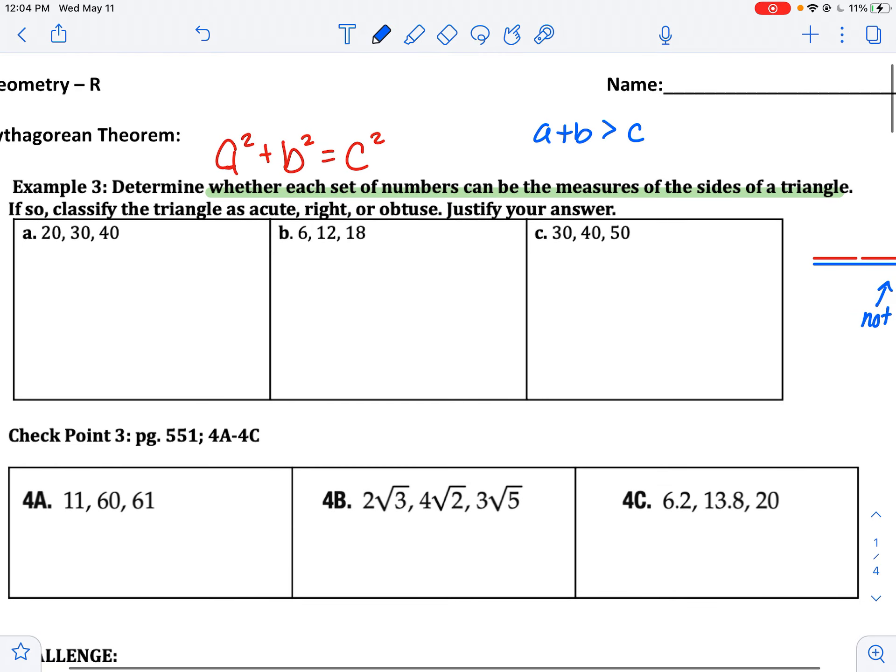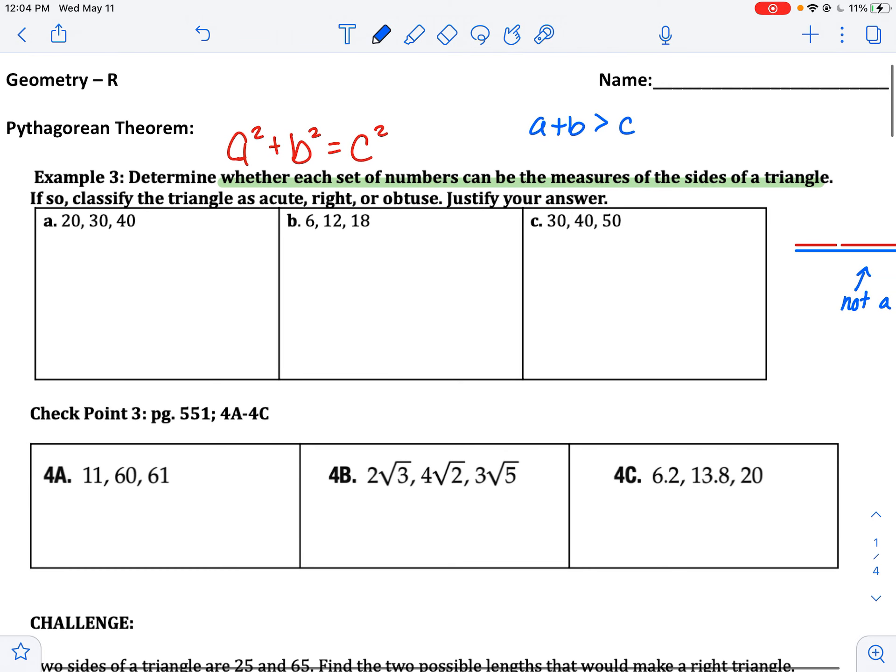Let's just take a second and check here to make sure these are all triangles. 20 and 30 is 50, that works. 6 and 12 adds up to 18, but that is not larger than 18, so that would not be a triangle. The other ones work. So C would work and A would work.